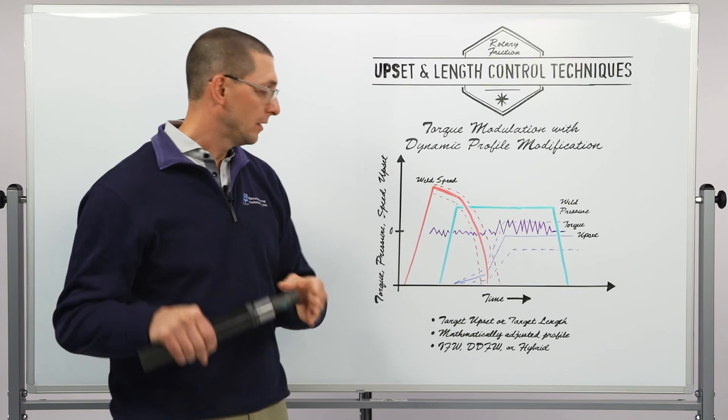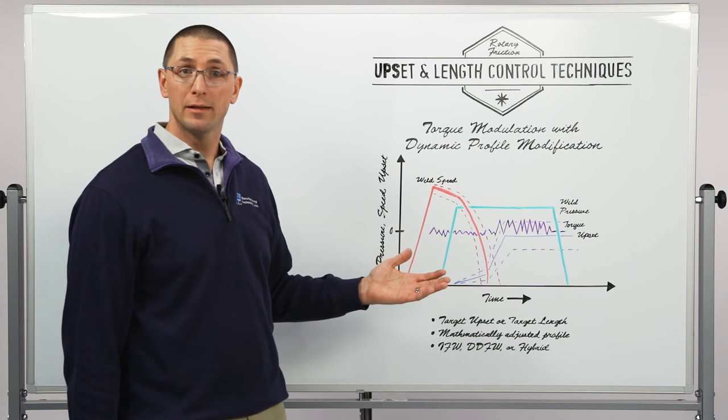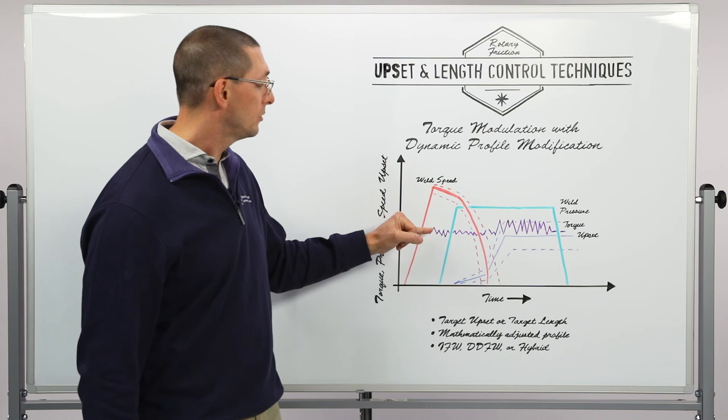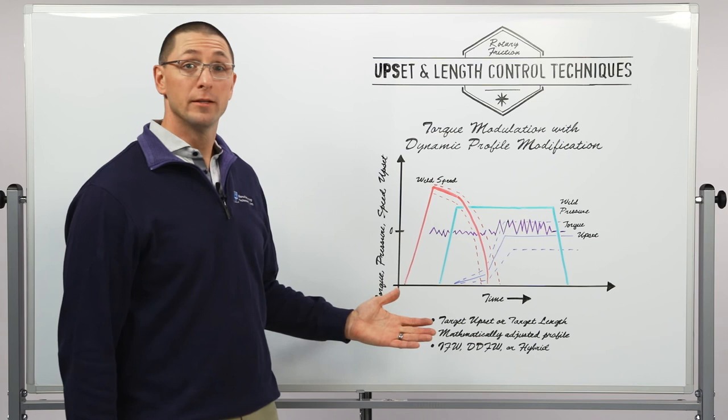Now this is again a very responsive system that happens very quickly. We're mathematically adjusting the profile and the starting energy in order to get us very close and then we're using torque modulation to close the loop and achieve a new target upset.